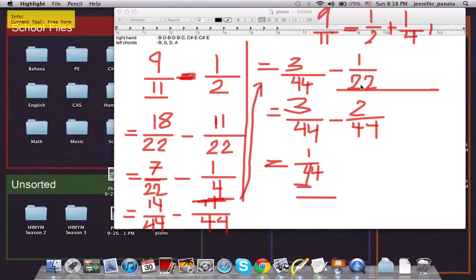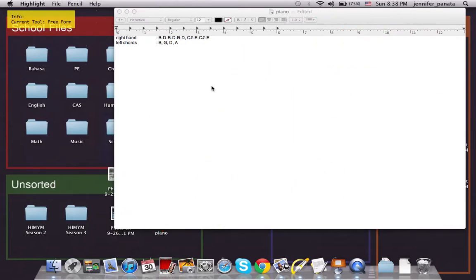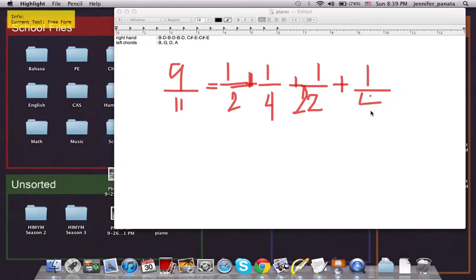Remember we have 1 over 44 and 1 over 2, so that means our answer is 9 over 11 equals 1 over 2 plus 1 over 4 plus 1 over 22 plus 1 over 44, and we are done.